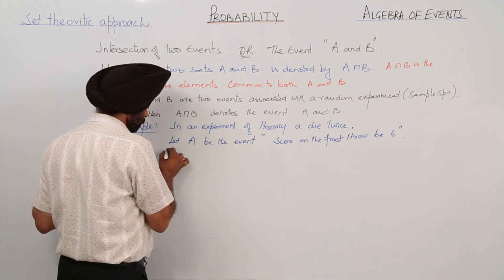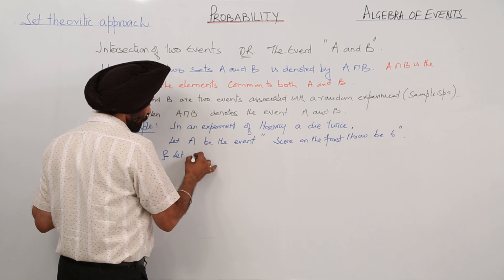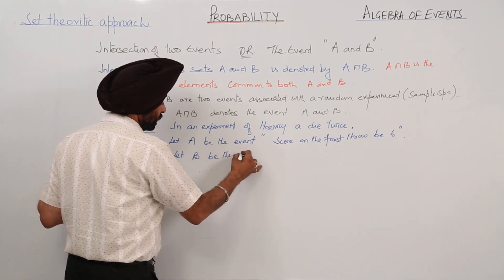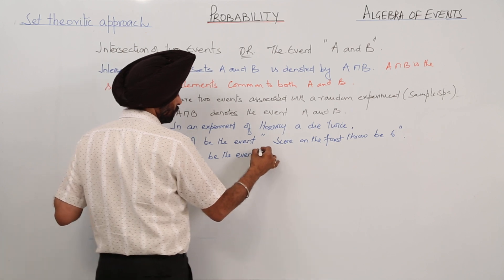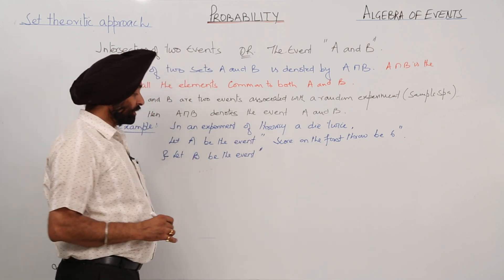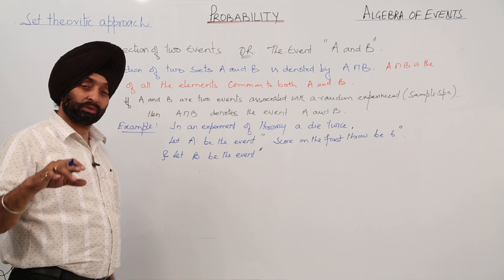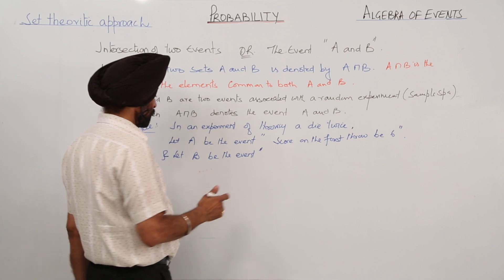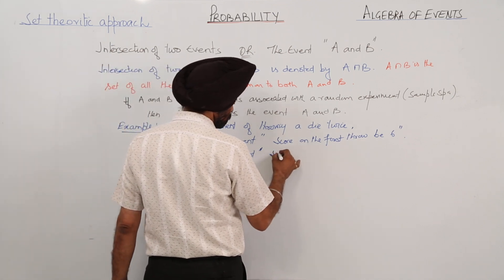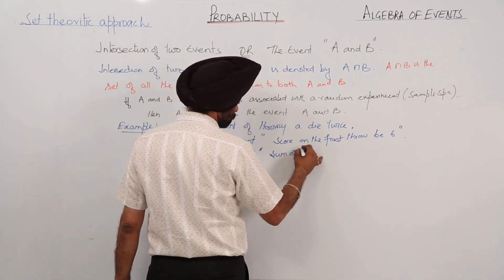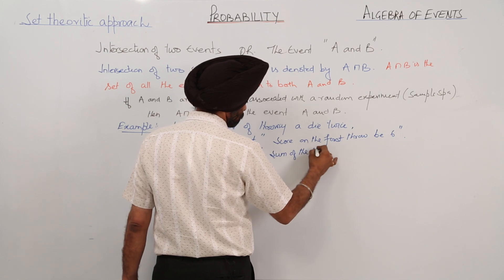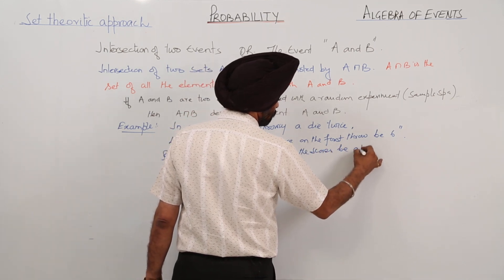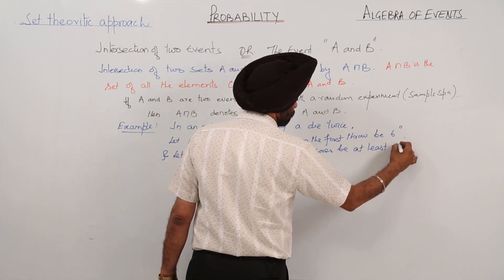And let capital B be the event - sum of the scores be at least eleven.